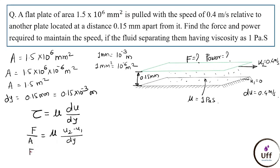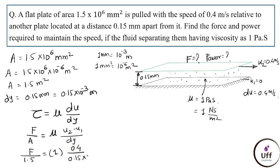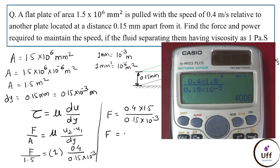Substituting the values: F/A = μ(du/dy), so F/1.5 = 1 × (0.4 / 0.15 × 10⁻³). Area is 1.5 m², dynamic viscosity is 1 N·s/m², du = 0.4 m/s, and dy = 0.15 × 10⁻³ m. Calculating these values gives force = 4000 N.